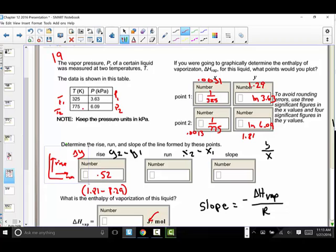Same idea here, the change in x is the difference between x2 and x1. So for me, it would be 0.0013 minus 0.0031, x2 minus x1. And here I'm getting a negative 0.0018. And that's correct. Remember, this is a negative slope.